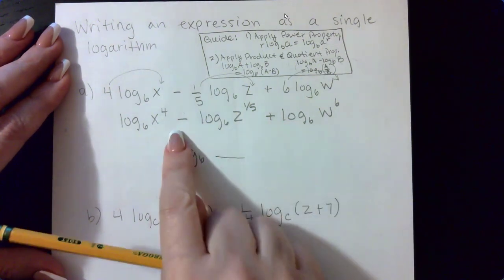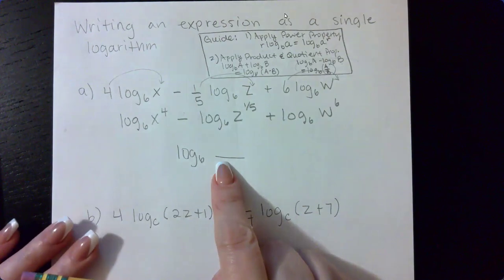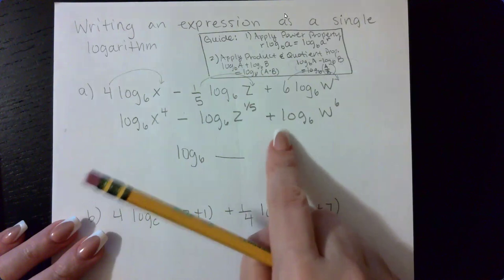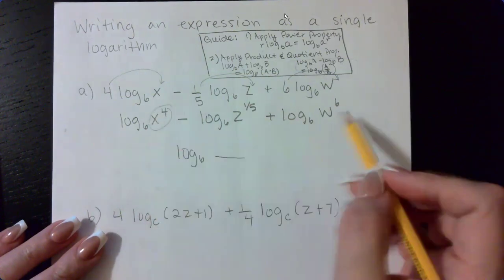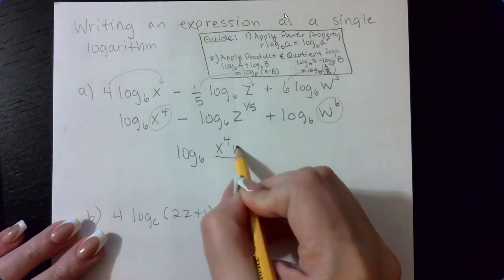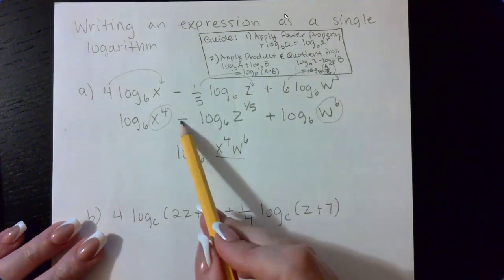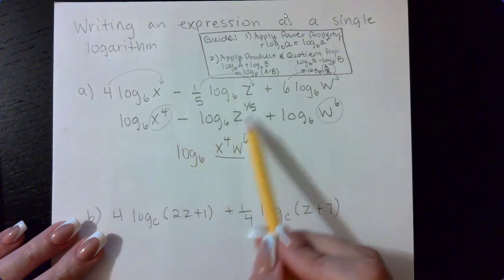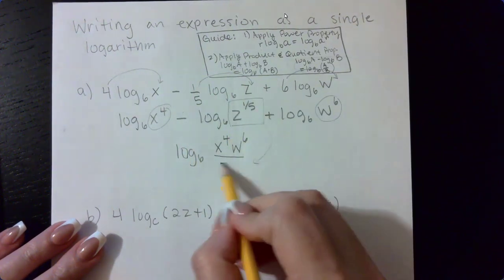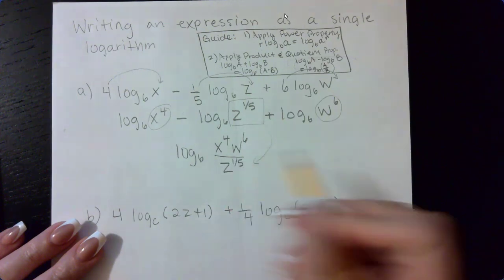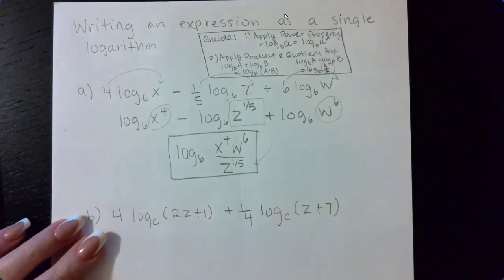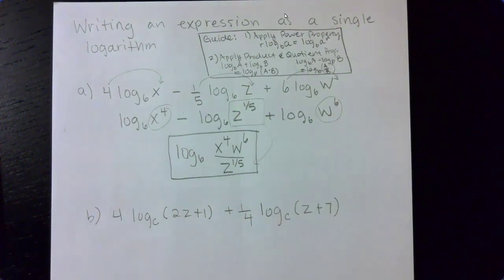So because we have a minus, I know there's going to be a fraction bar. Now remember, this is a positive log and this is a positive log. So this argument and this argument are going to get multiplied together in the numerator. The log that has a negative in the front, this argument will actually go in the denominator. It'll be z to the 1/5. And this is the expression that they're wanting. That is one single logarithmic expression.